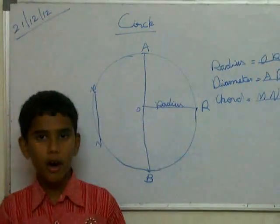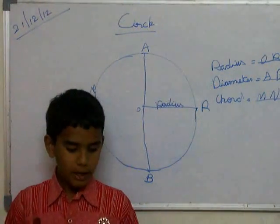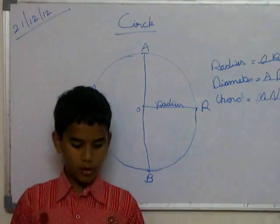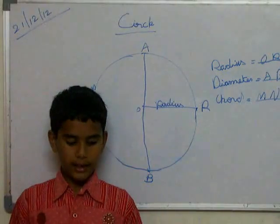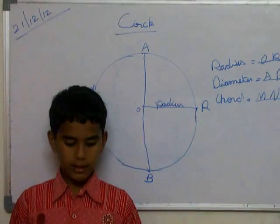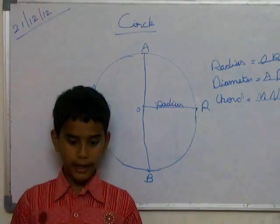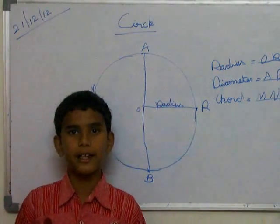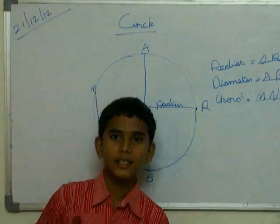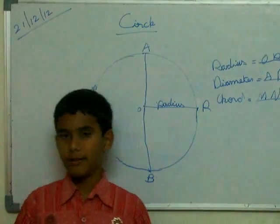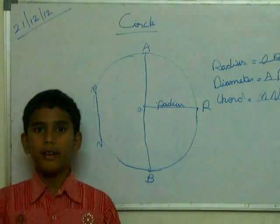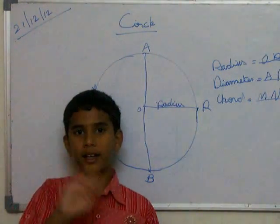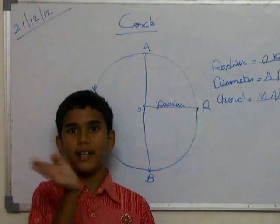Now chord. Chord of a circle is the line segment joining any two points on the circle. It is known as chord. Ok, bye bye. See you later.